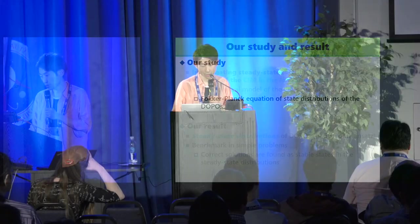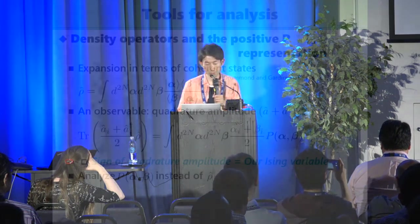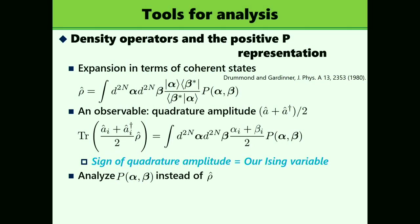The next Fokker-Planck equation, before that, I explained tools for analysis. A density operator describes the test system, and we use a positive P representation to describe the density operator. We expand the density operator in terms of coherent states, alpha and beta, and we obtain the distribution P. We focus on the distribution P instead of the density operator itself.